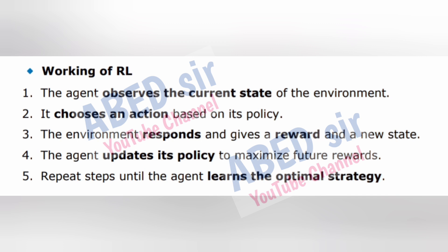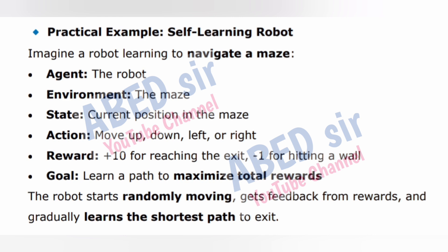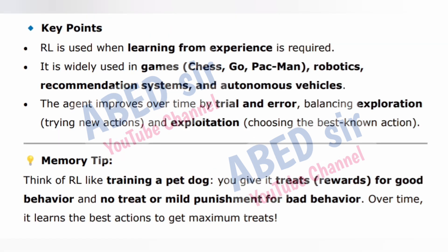Repeat steps until the agent learns the optimal strategy. Practical example: Self-learning robot. Imagine a robot learning to navigate a maze. Agent: the robot. Environment: the maze. State: current position in the maze. Action: move up, down, left, or right. Reward: +10 for reaching the exit, -1 for hitting a wall. Goal: learn a path to maximize total rewards. The robot starts randomly moving, gets feedback from rewards, and gradually learns the shortest path to the exit.